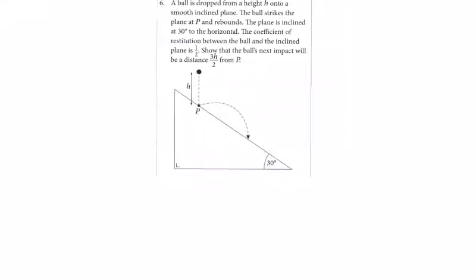Question 6. We have a ball dropped from a height h to a smooth inclined plane. The ball strikes at P, the plane is inclined at 30 degrees, and the coefficient of restitution is one half. Show that the ball's next impact will be a distance 3h over 2 from P.